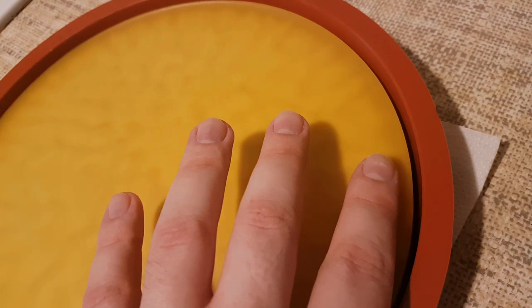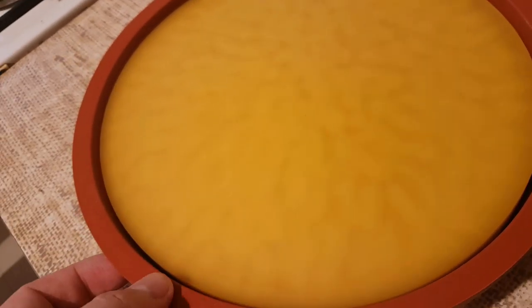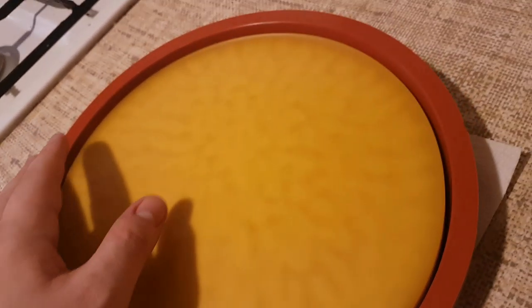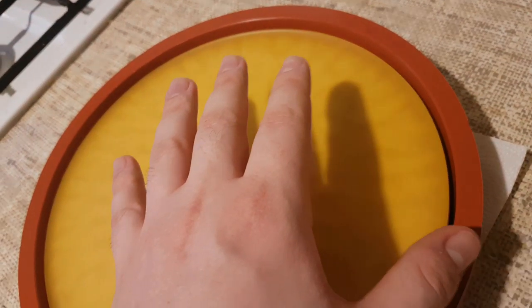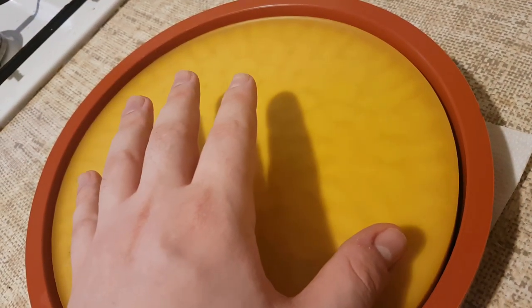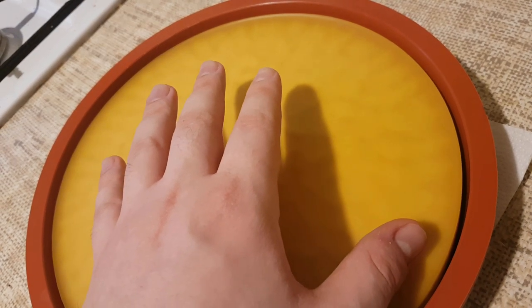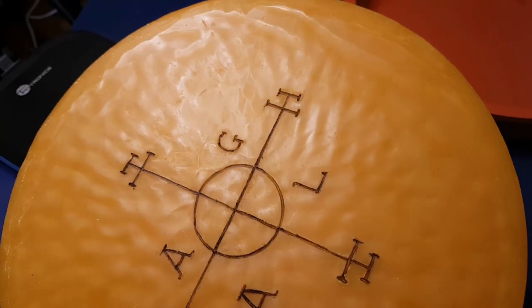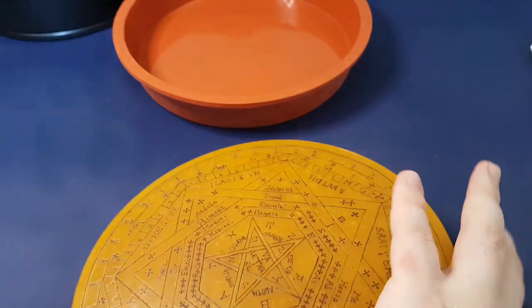However, what happens as it shrinks is that you can see this is the top. It kind of undulates like this. And this is very, very mild. What you normally get is a very strong undulation, which wasn't acceptable to me.